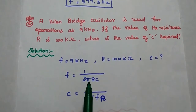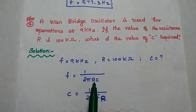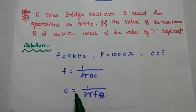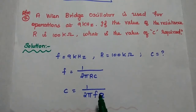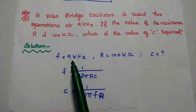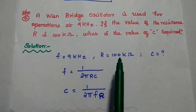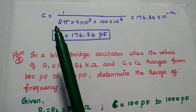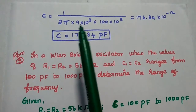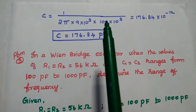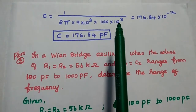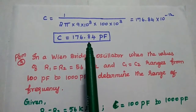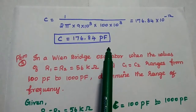Here f equals 1 by 2 pi RC. From this, we can derive the capacitance: C equals 1 by 2 pi f times R. Substituting the values, C equals 1 by 2 pi times 9 times 10 to the power 3 times 100 times 10 to the power 3. Then we get the answer as 176.84 picofarad.